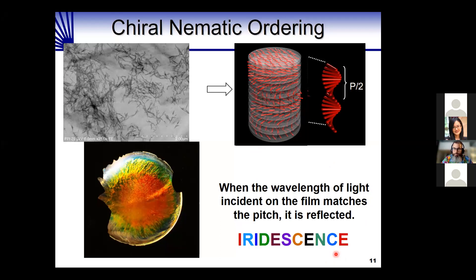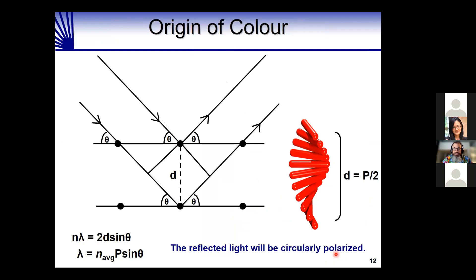The origin of the color is simply an extension of Bragg's law. Many of you will be familiar with Bragg's law for X-ray diffraction from crystalline materials. In this case the d-spacing corresponds to the helical pitch, and when that pitch matches the wavelength of light you get selective diffraction. Because the d-spacing is hundreds of nanometers, the wavelengths diffracted are in the visible range.